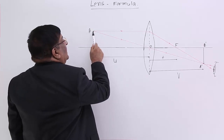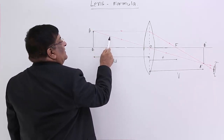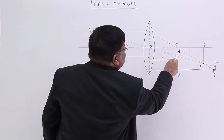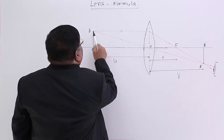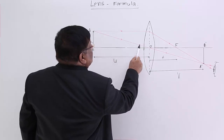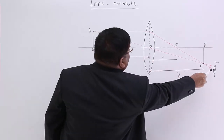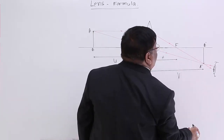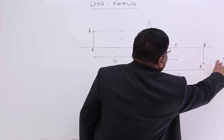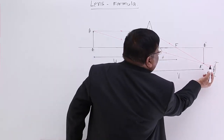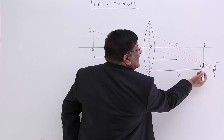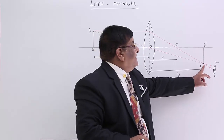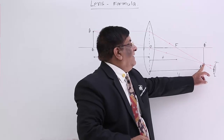From point A we take two rays. One is parallel to the principal axis — after refraction it will pass through the focus and go straight. The other ray is taken in the direction of the optical center, which goes undeviated. Both rays intersect at a single point, which is the location of the image, and we name it A'.